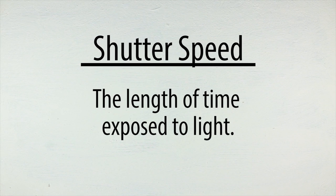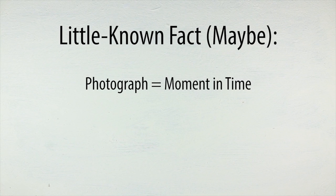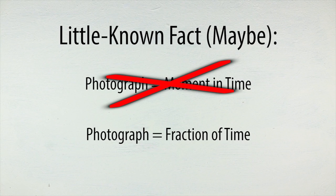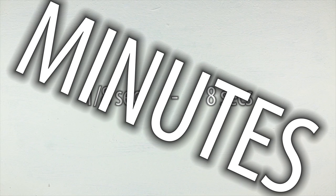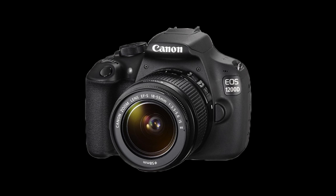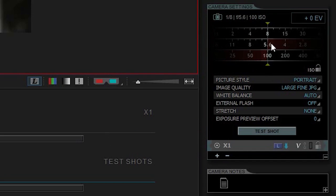Shutter speed is the length of time a camera sensor is exposed to light. Little known fact: a photograph isn't capturing a moment in time, it's capturing a fraction of time, which can be as quick as a fraction of a second, or as long as several seconds, or maybe even minutes if you're feeling adventurous — but your camera might explode! Not really, but maybe.